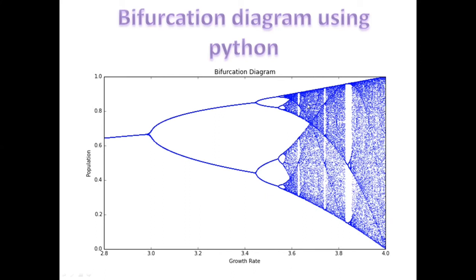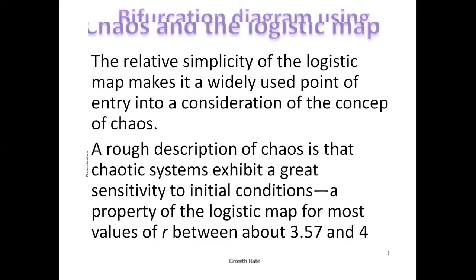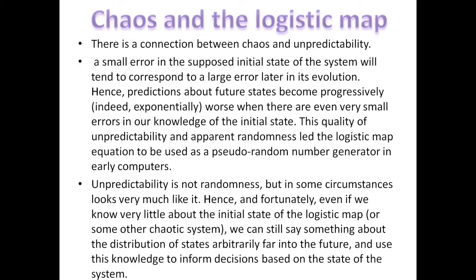A rough description of chaos is that chaotic systems exhibit a great sensitivity to the initial conditions, which is the property of the logistic map for most values between 3.57 and four. Its value becomes completely unpredictable. And the value that X takes is actually used in a lot of pseudo random number generators, because it's just so unpredictable.